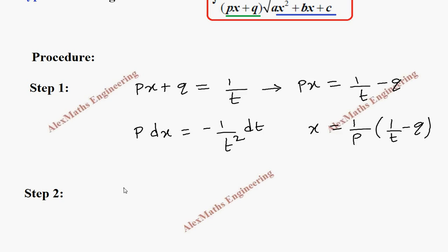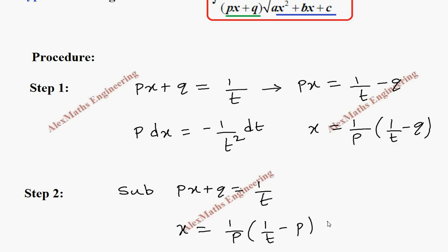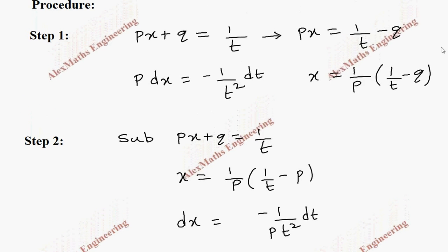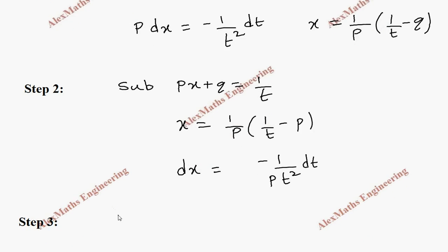As a summary of Step 2: substitute px + q as 1/t, x as (1/p)(1/t − q), and dx as −(1/t²)dt with the p factor accounted for. After all these substitutions, we get everything in terms of t and then we integrate.